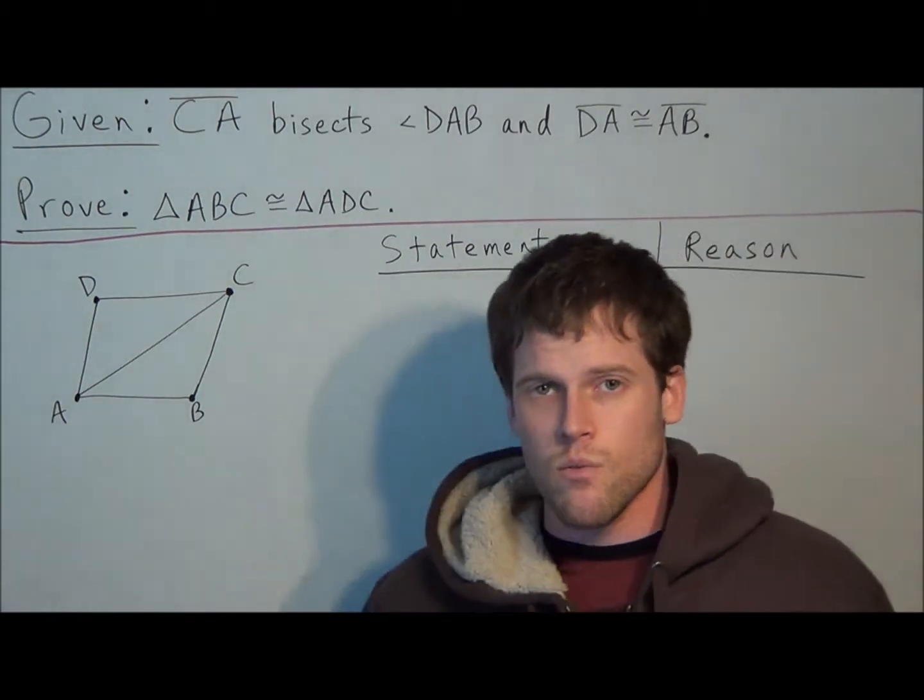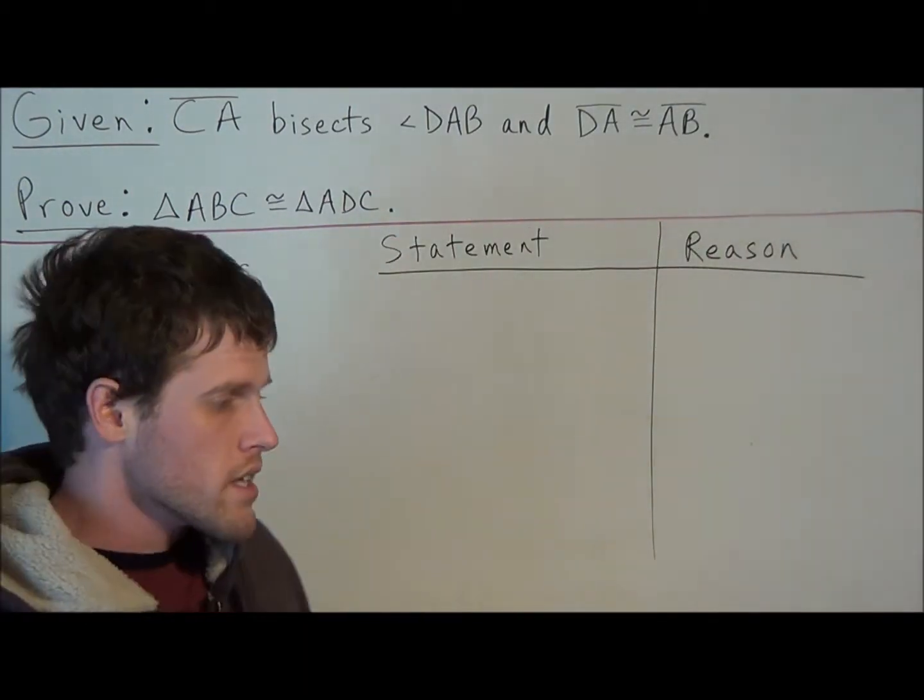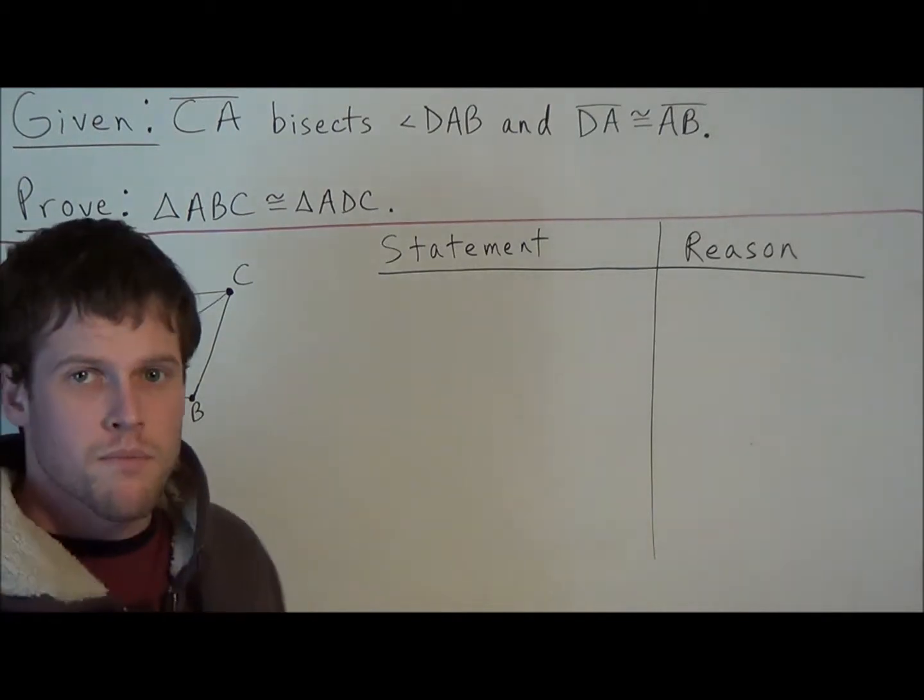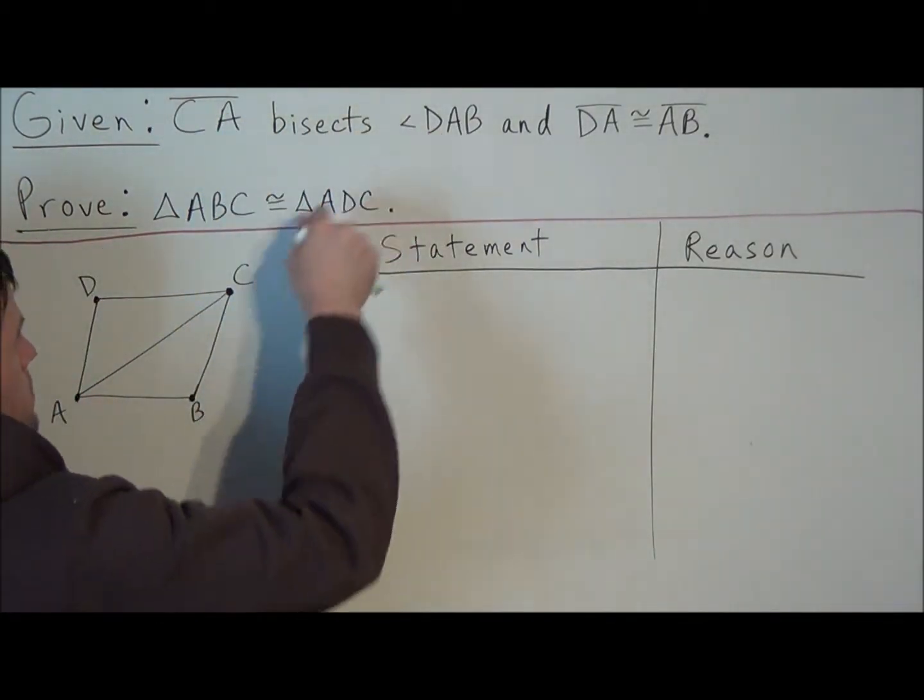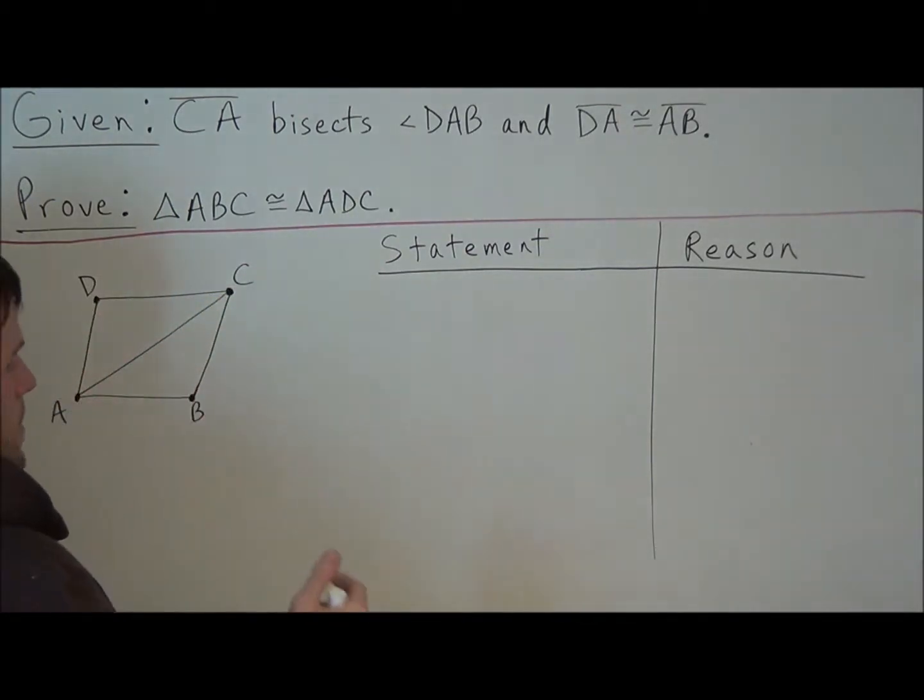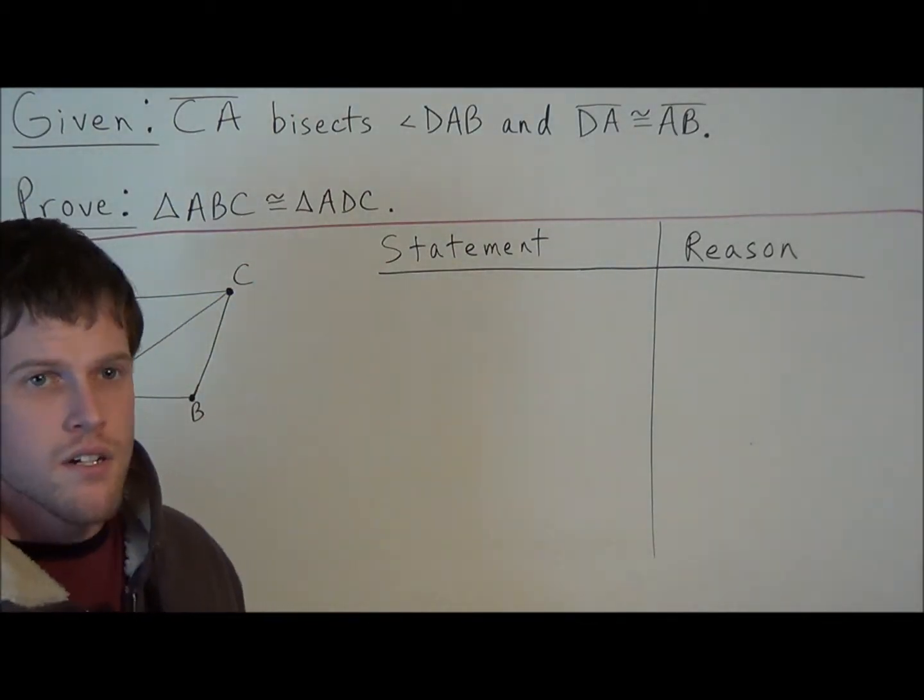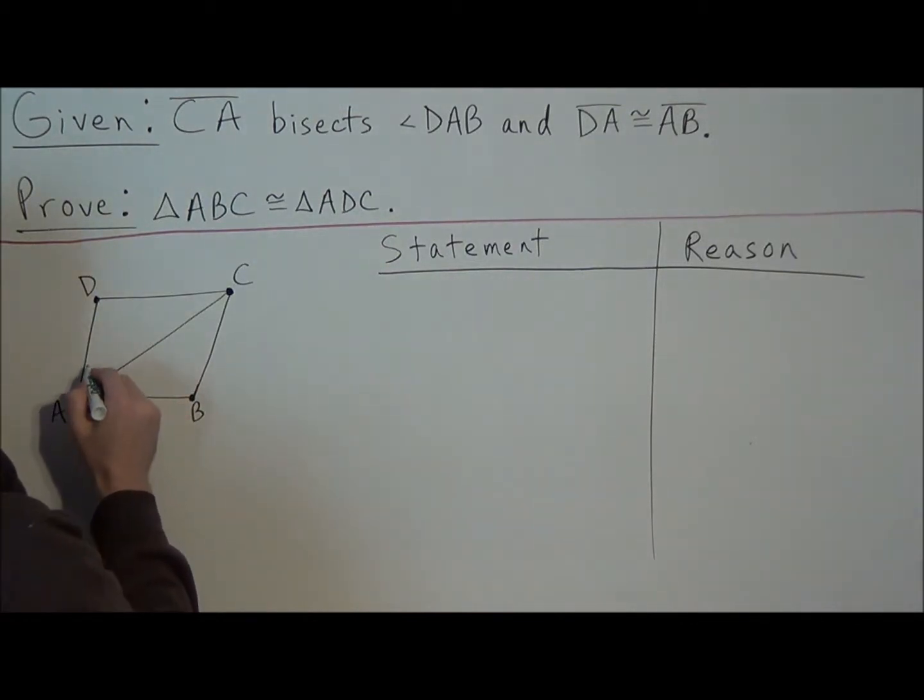So the first thing that we should do with any triangle proof is take the given information and mark up the diagram that's given to you. So when we read that CA bisects angle DAB, by definition of a bisector, that means that CA is cutting this angle in half. So that means that these two angles here are going to be congruent.